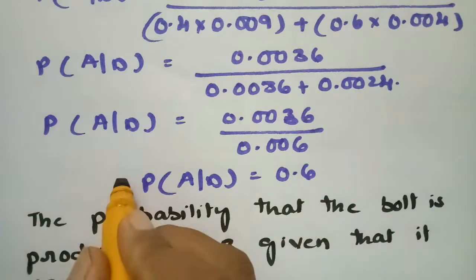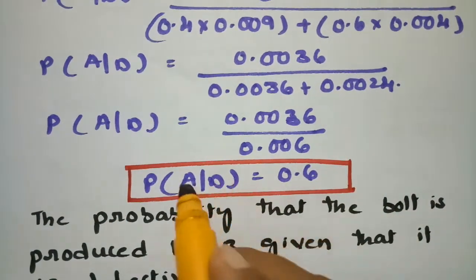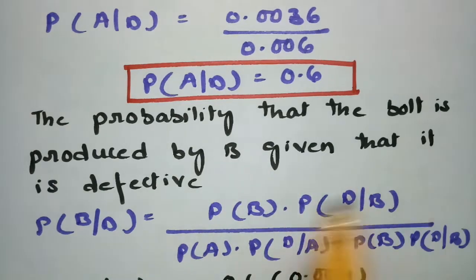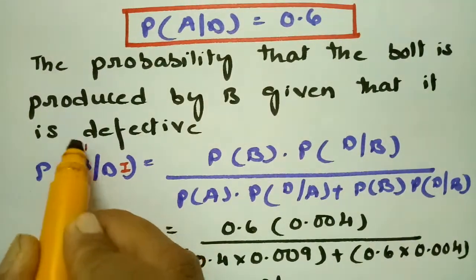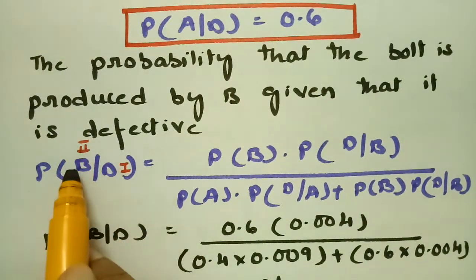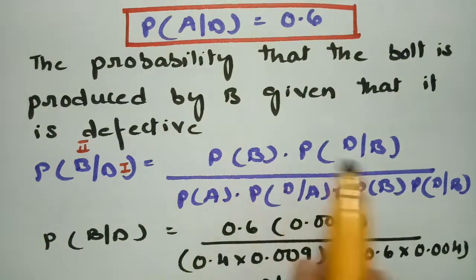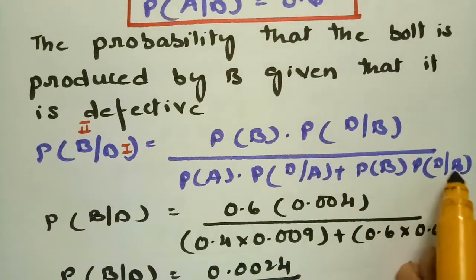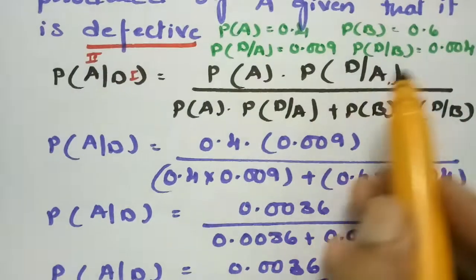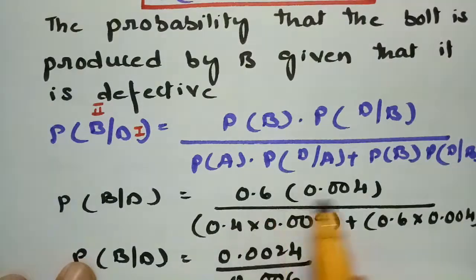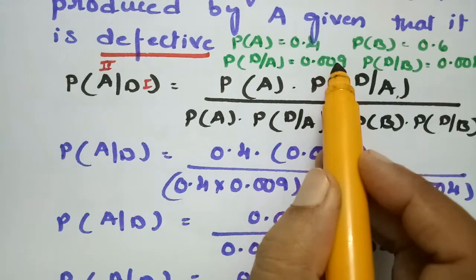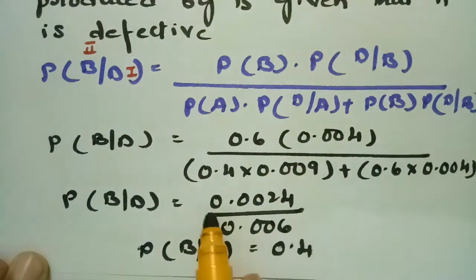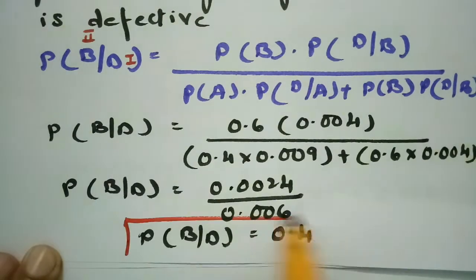After multiplying and adding, the result is 0.6. So the probability that the defective bolt is from machine A is 0.6. Next, the probability that the bolt is produced by B given that it is defective: P(B|D) = P(D|B) times P(B) divided by P(A) times P(D|A) plus P(B) times P(D|B), which gives 0.6 times 0.004 divided by 0.4 times 0.009 plus 0.6 times 0.004, that is 0.0024 by 0.006, which equals 0.4.